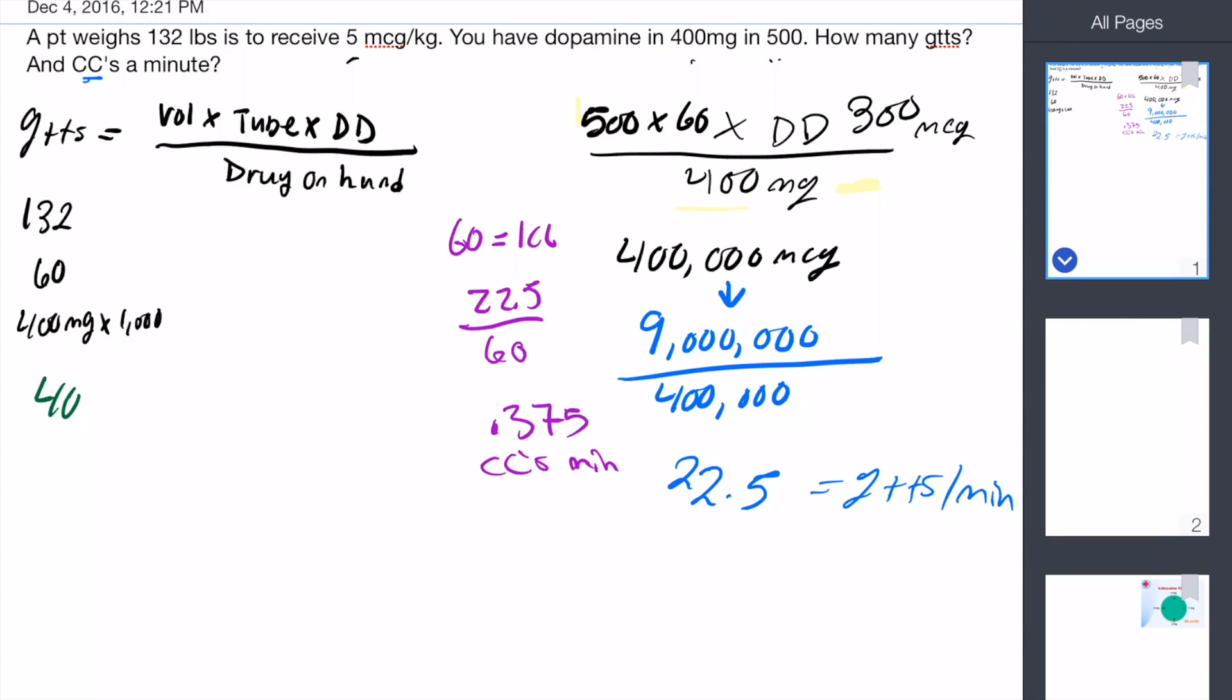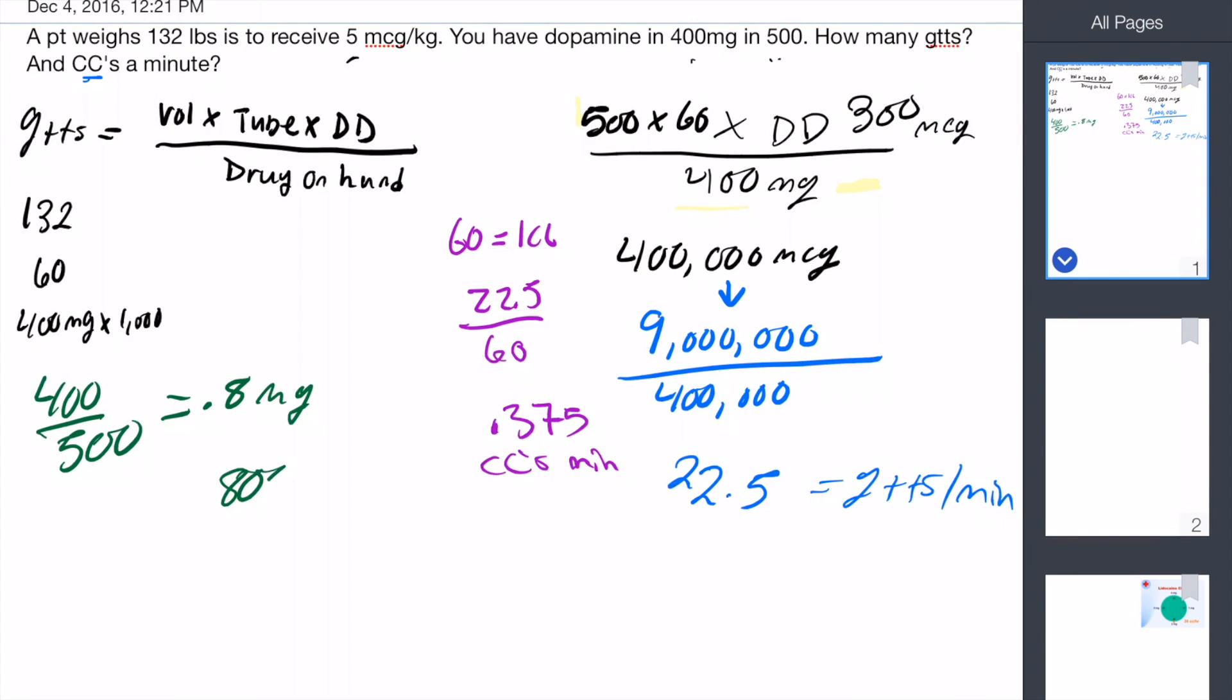In this case, 400 in 500, and that gives you 0.8. Now this is 0.8 in milligrams. You still need to convert that into micrograms for the equation to work, so you'll times that by 1,000. That gives you a concentration of 800, and this is per ml, don't forget.